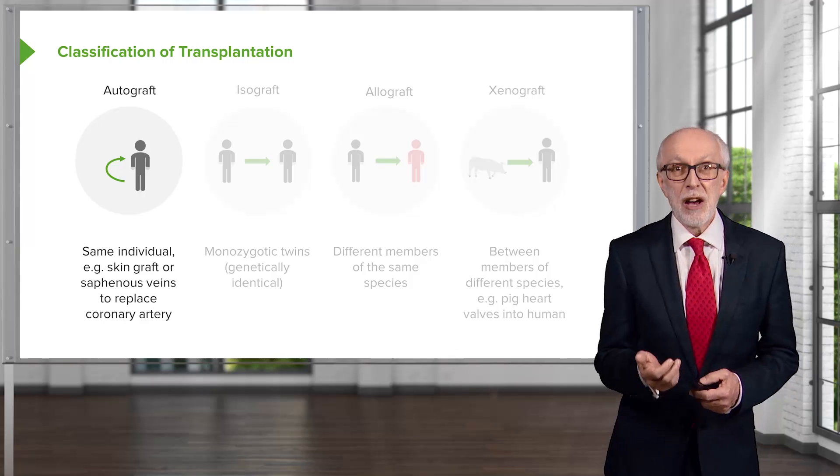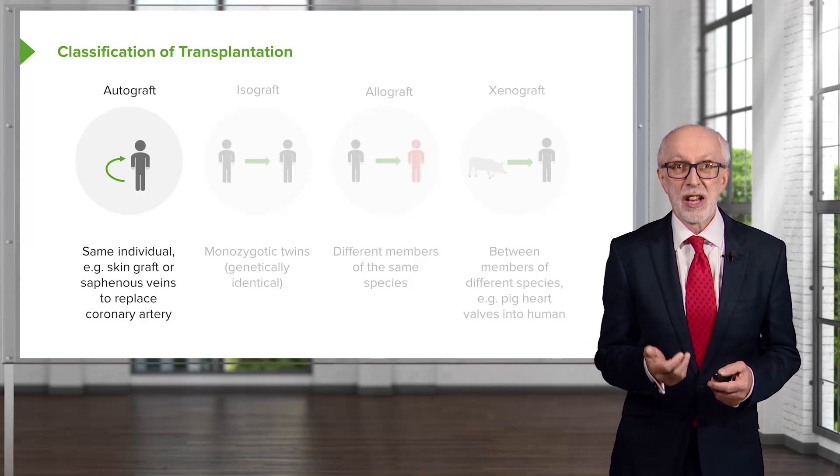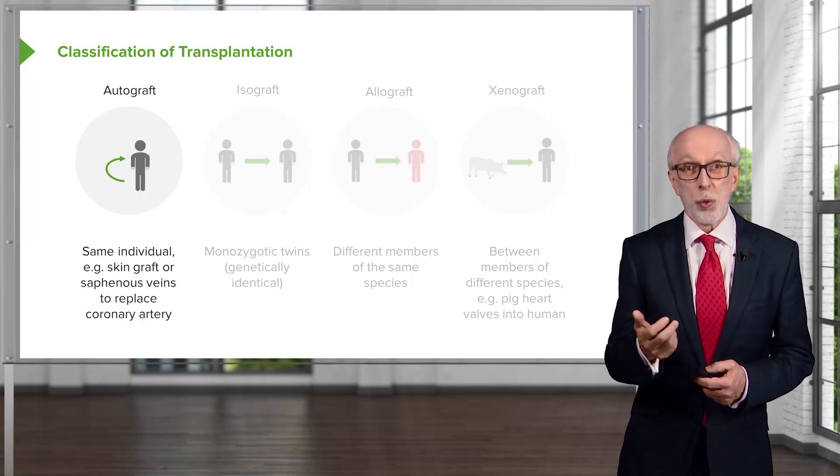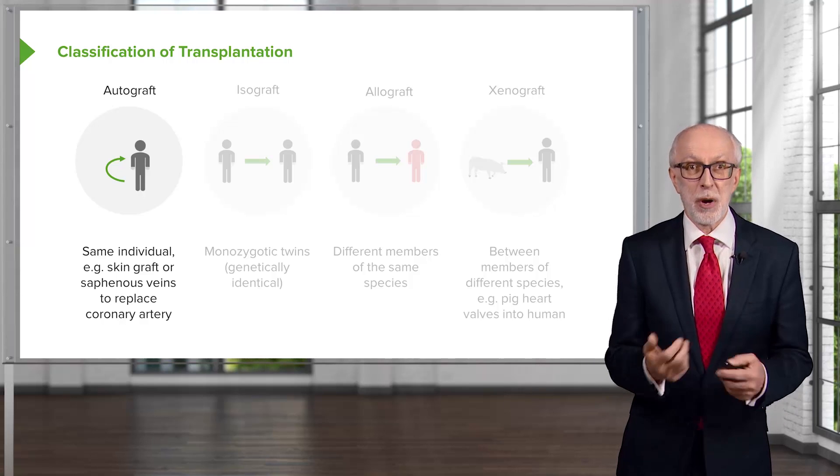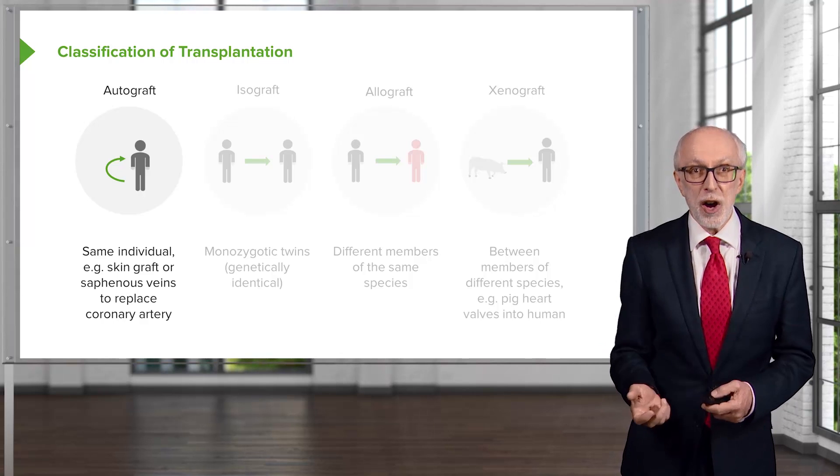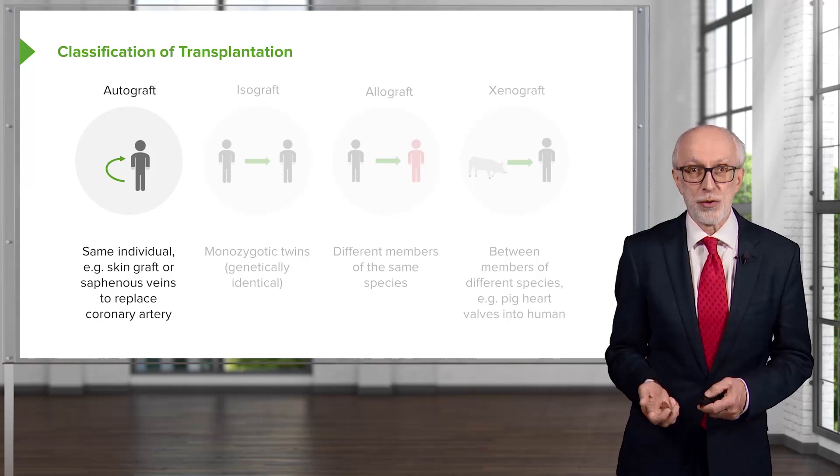Let's have a look at the four different types of ways in which transplants can be classified. An autograft is a graft from one part of the body to another part of the body in the same individual. For example, a skin graft or a saphenous vein graft to replace a coronary artery.